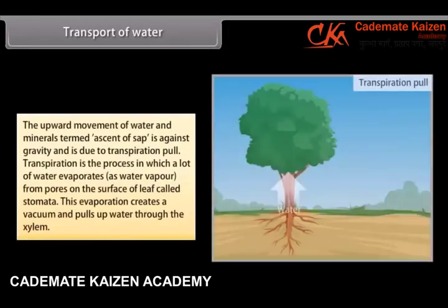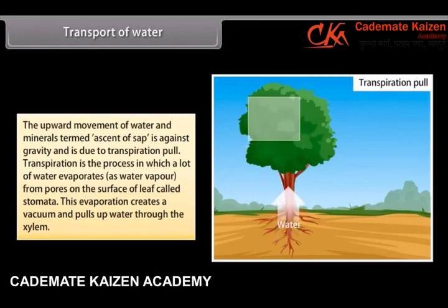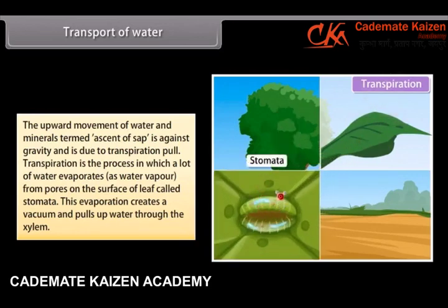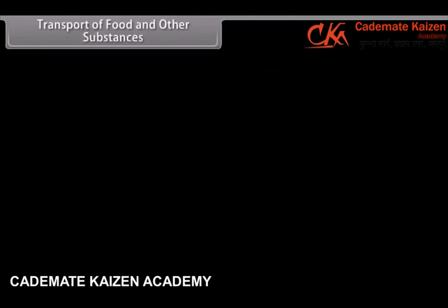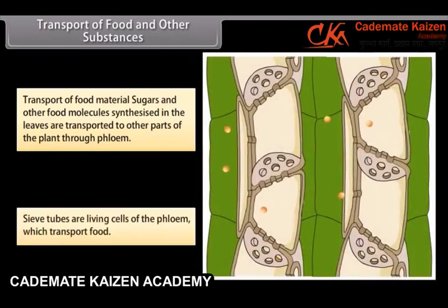The upward movement of water and minerals, termed ascent of sap, is against gravity and is due to transpiration pull. Transpiration is the process in which a lot of water evaporates as water vapour from pores on the surface of the leaf called stomata. This evaporation creates a vacuum and pulls up water through the xylem. Sugars and other food molecules synthesized in the leaves are transported to other parts of the plant through phloem. Sieve tubes are living cells of the phloem which transport food.